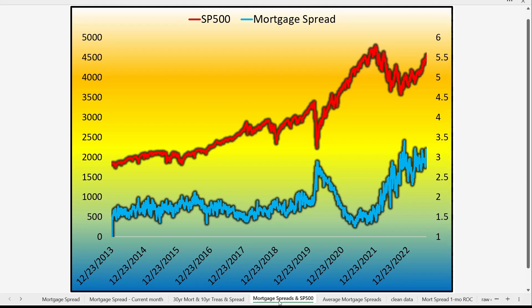Here is the S&P 500 in red and the mortgage spread in blue. Generally, we see an inverse correlation: when the stock market goes up, mortgage spreads go down; when the stock market goes down, mortgage spreads go up. So what's happening right now? The S&P 500 is chugging along near highs with the RSI above 70 — things look great — yet mortgage spreads are not going down. That is really the question.